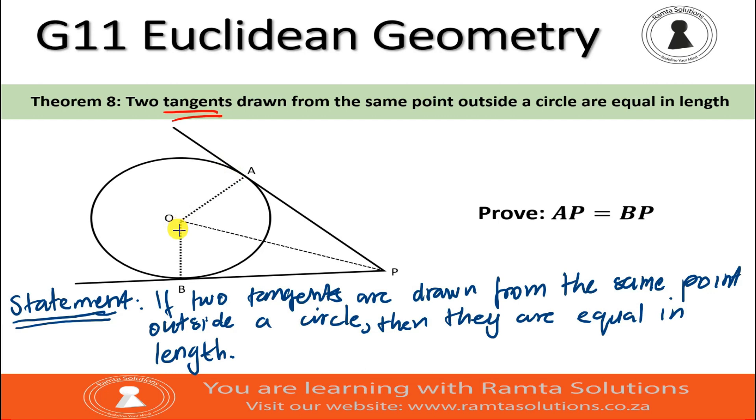If O is the center of the circle, this means OA is the radius and OB is also a radius. Again, as you can see in these two triangles, OP is a common side. So, let's start there.